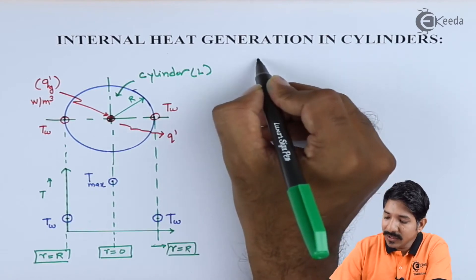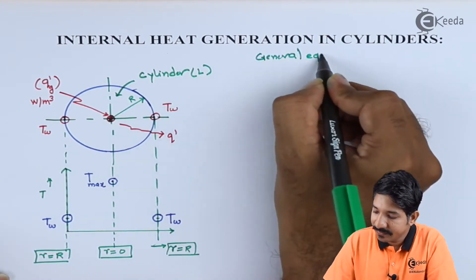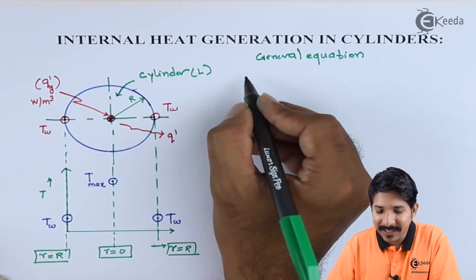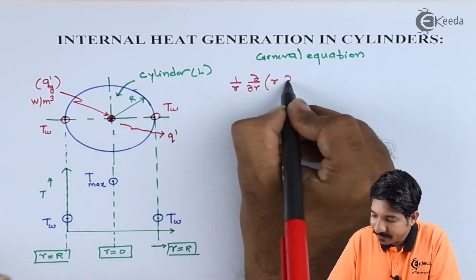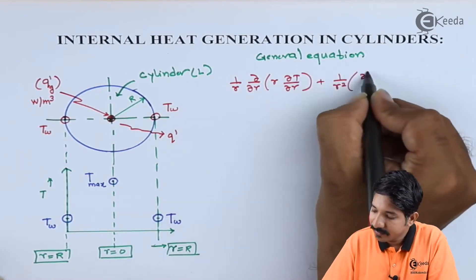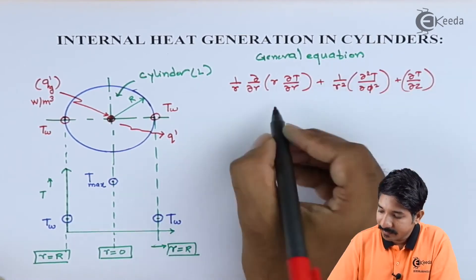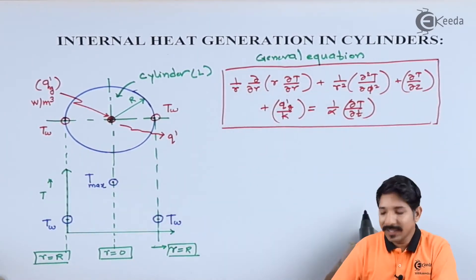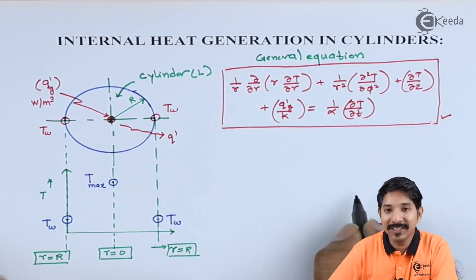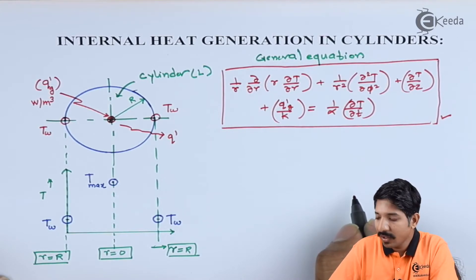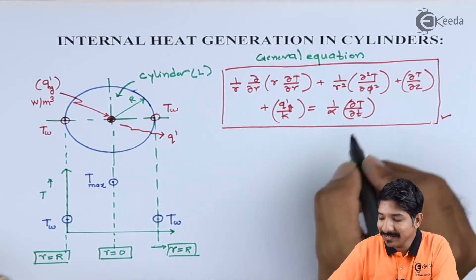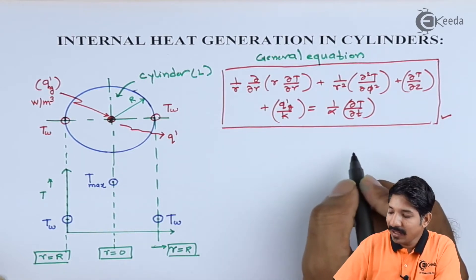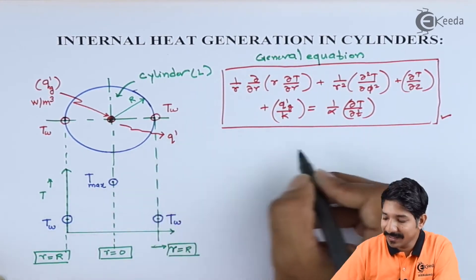Now let us write down the general equation in the case of cylindrical format. We know this general equation, and we have seen the derivation of this general equation for polar coordinates. Now let us deduce this general equation to a simplified equation and start solving it for the given case.